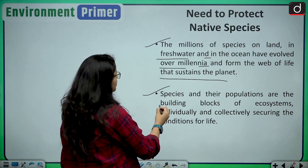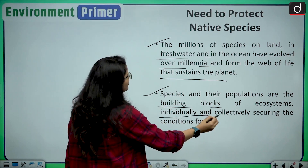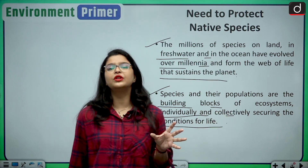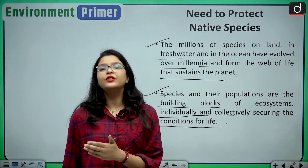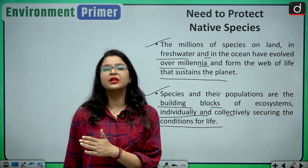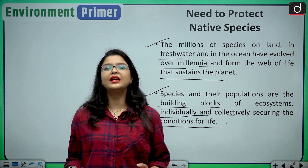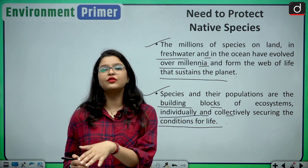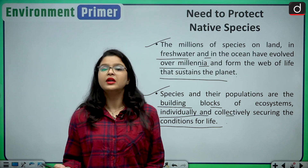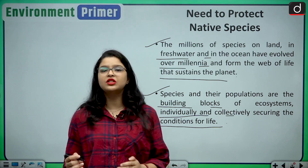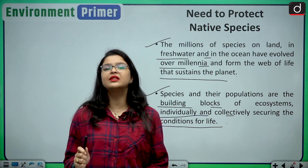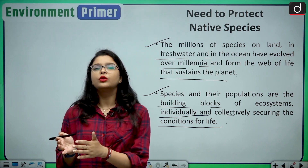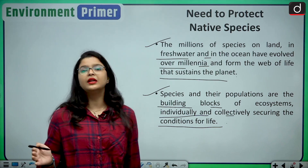Species and their populations are the building blocks of ecosystems, individually and collectively securing the conditions for life. They are very important for the existence of human life on earth, yet we are constantly damaging them. Humans don't understand that if we damage nature, that damage will come back on us. You cannot exist alone on this earth — you need other types of food webs and species to be interdependent upon.